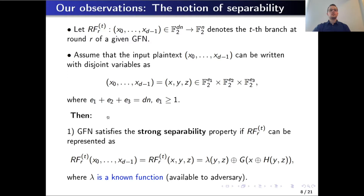We have the following definition: a generalized Feistel network satisfies strong separability if the observed branch is represented with functions lambda, h, and g, such that lambda depends on y and z, h depends on y and z, and g depends on x plus h(y,z). Here we assume that lambda is a known function — either public or one the adversary may query.